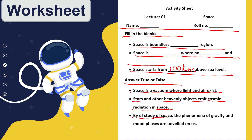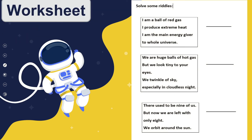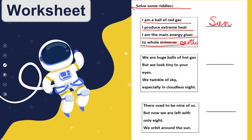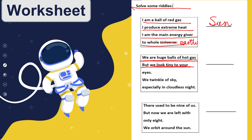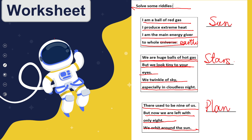Stars and other heavenly objects emit cosmic radiations in space — true. By the study of space, the phenomena of gravity and moon phases are unveiled — true. Now solve some riddles: I am a ball of red gas, I produce extreme heat, I am the main energy giver to the whole Earth — that is the Sun. We are huge balls of hot gas but we look tiny and twinkle in the sky, especially on cloudless nights — those are stars. There used to be nine of us but now we are left with only eight, and we orbit around the Sun — those are the planets.